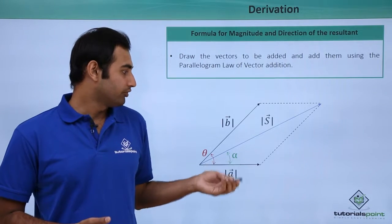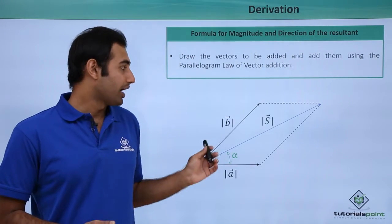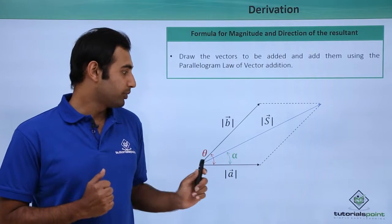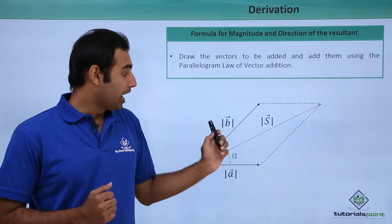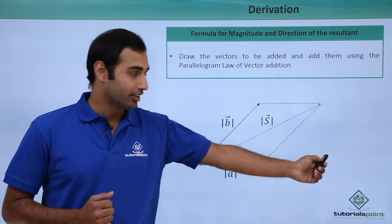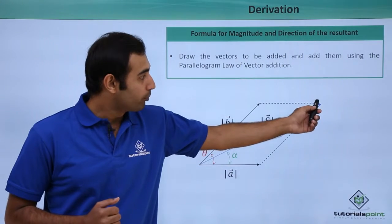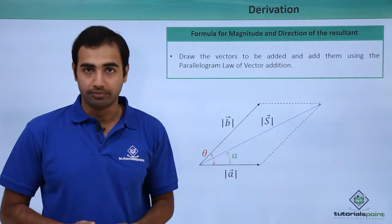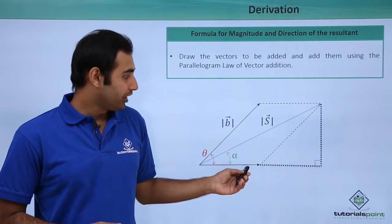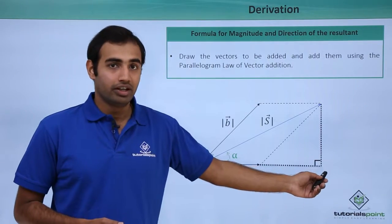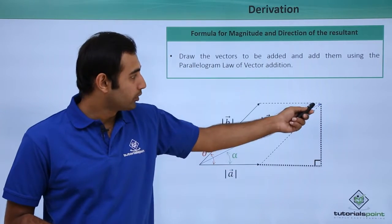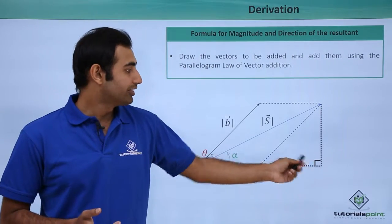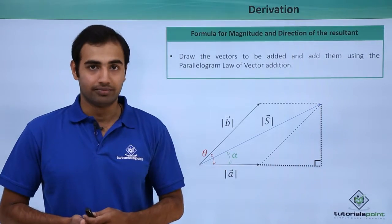To find the magnitude of the S vector, I will do a small construction. I will extend the line of vector a forward and drop a perpendicular from the tip of vector b down to that extended line. So here we have this angle as 90 degrees clearly.